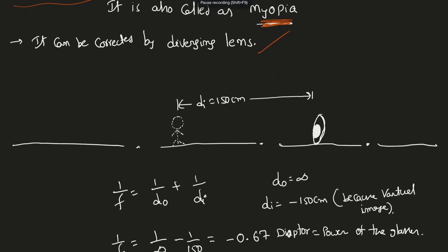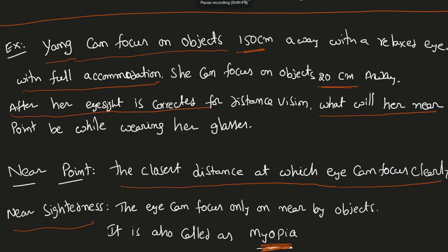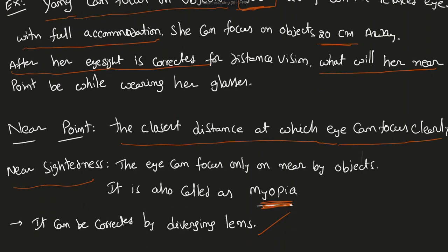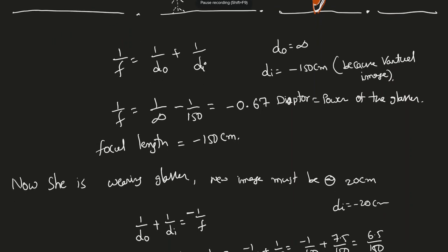Here is the diagram. Basically here is the eye — I didn't draw a great diagram but that's the eye. The object is always on the left-hand side in my diagram. Without glasses she can see objects which are 150 cm away. I'm trying to find the focal point or power of the glasses.